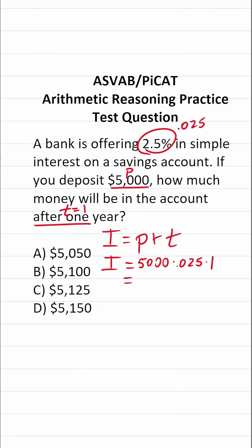Anything times 1 is itself, so 0.025 times 1 is 0.025. This becomes 5,000 times 0.025.